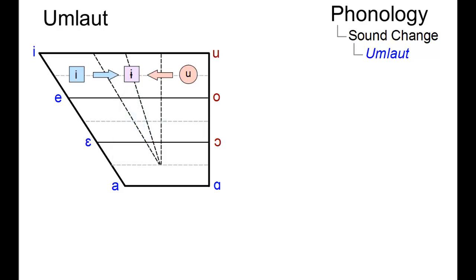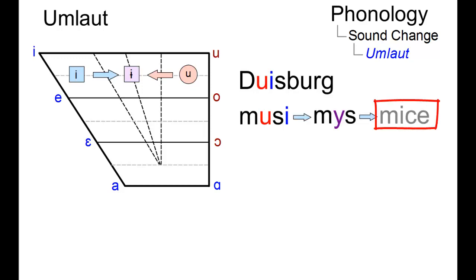A modern umlaut example is the German city name Duisburg. Historical examples can be found in some English plural forms, for example in Mais, which goes back to the West Germanic prototype Musi, which changed to Müs by means of umlauting.